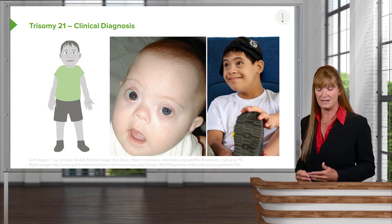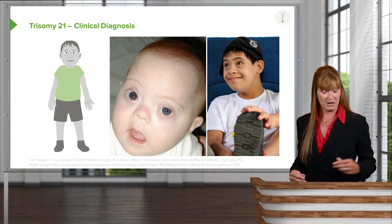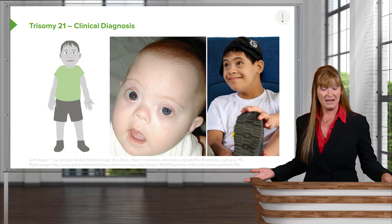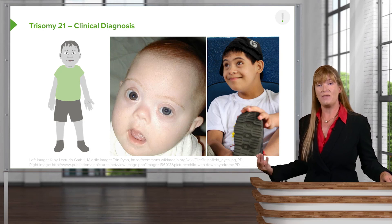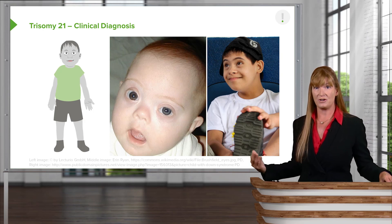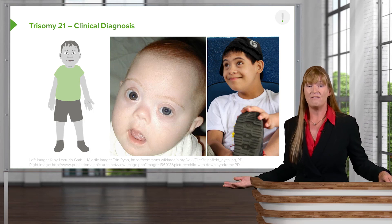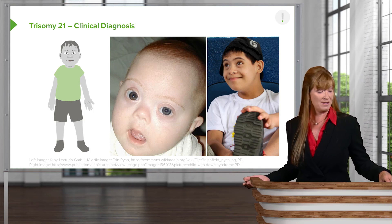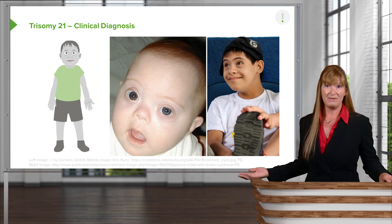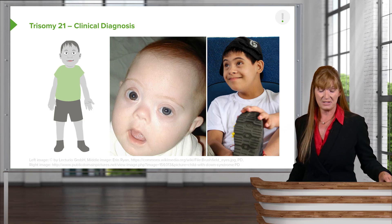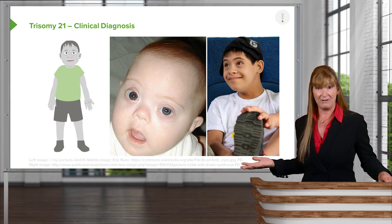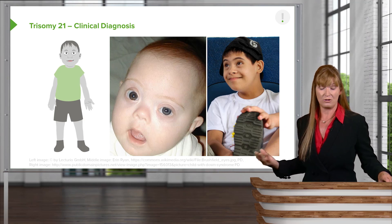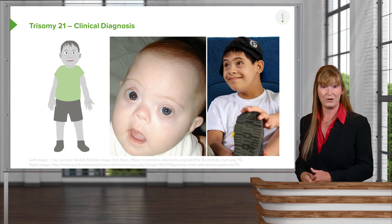Here are a couple of classic images of how Down syndrome manifests — it has a pretty characteristic appearance. Trisomy 21 is one that we should certainly be very familiar with for the USMLE exams, as it is a fairly common trisomy and chromosomal disorder.